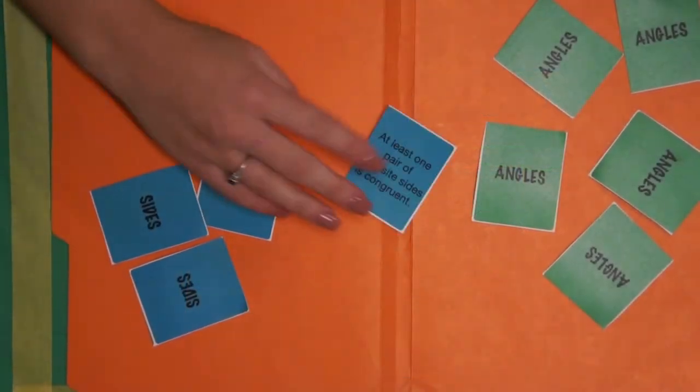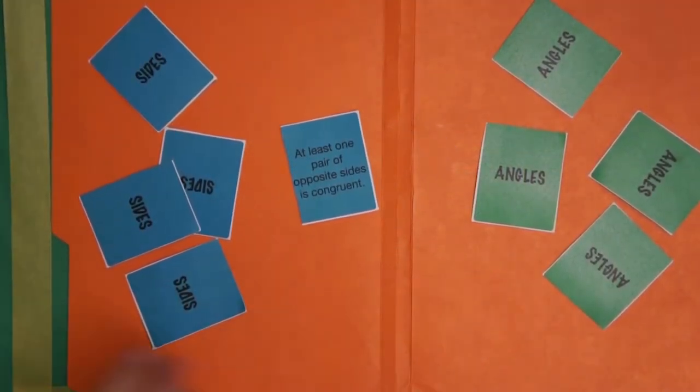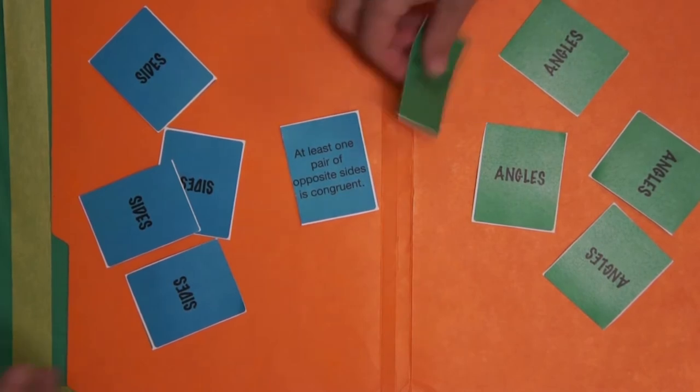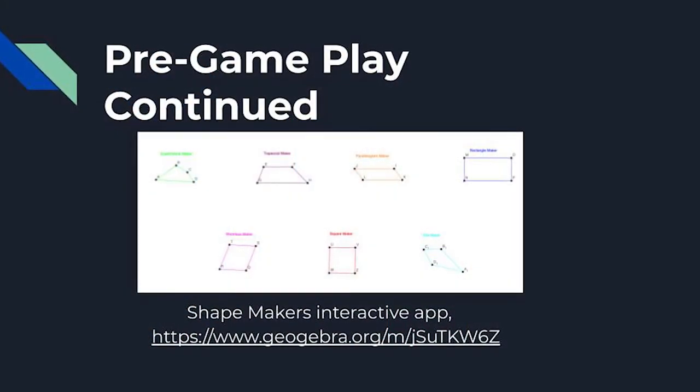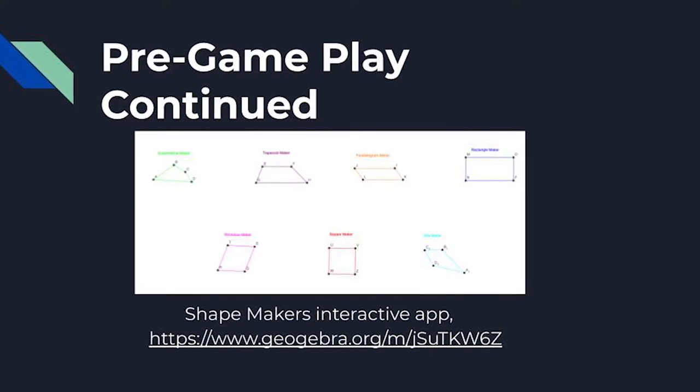Before the game begins, flip over a card from each pile. Try to create as many quadrilaterals you can using those two property cards. To further explore the properties of quadrilaterals, you can play with the Shape Makers interactive app on this website.